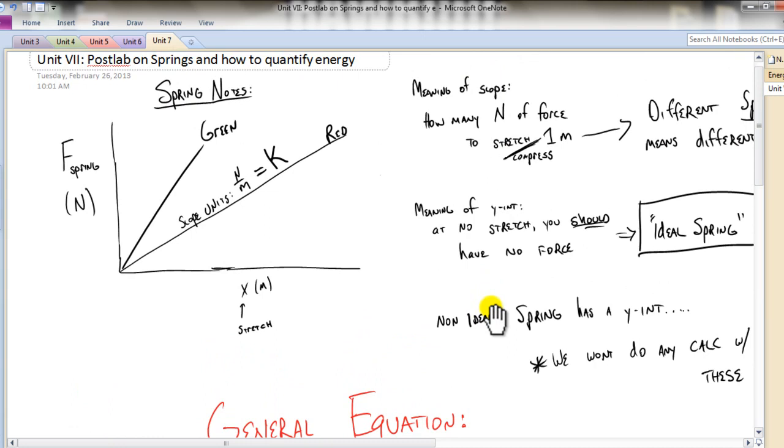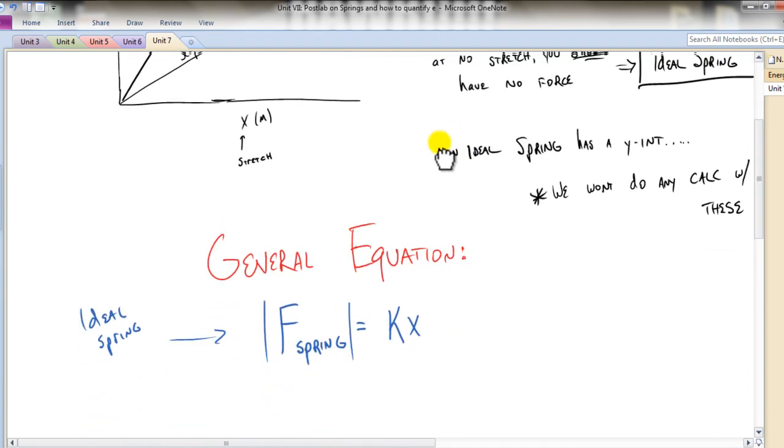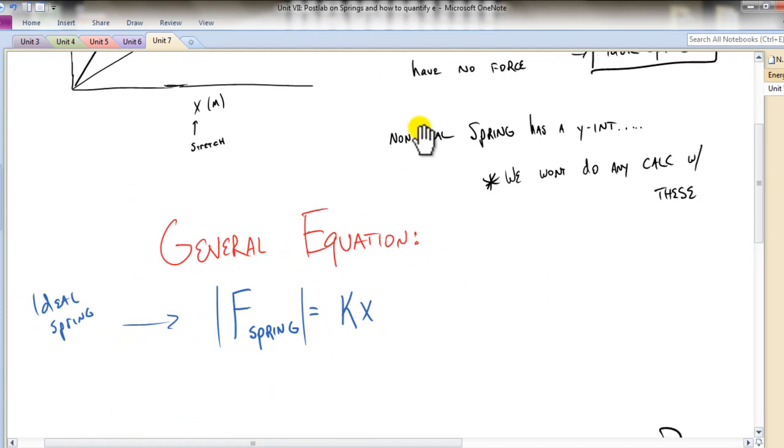Looking at this, we can come up with a general equation, being that we have F, x, and our slope. So we can say force of a spring is equal to k times x. Now, you'll notice that I'm actually doing the absolute value here. I want you guys to determine what direction that force is going to point. So you would have to determine the direction based upon the force diagram. Don't let a negative fool you in that situation. Just assume that it's the absolute value. So that is one of our equations.